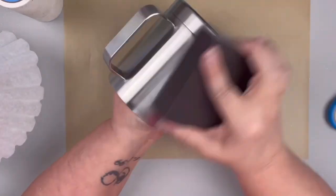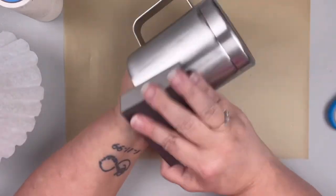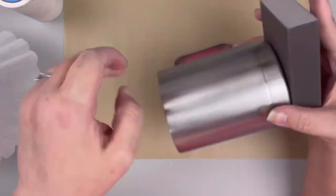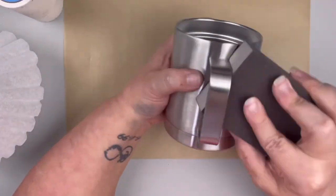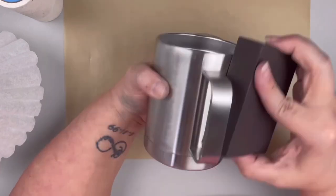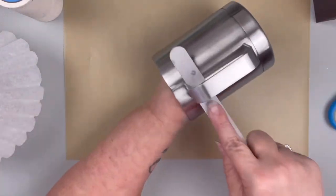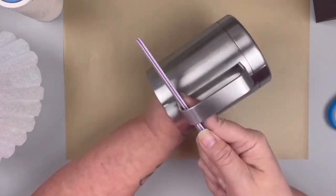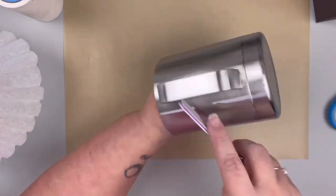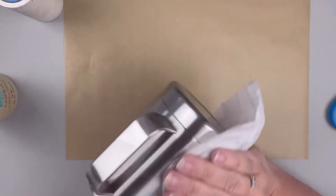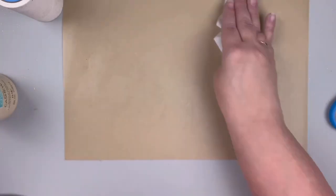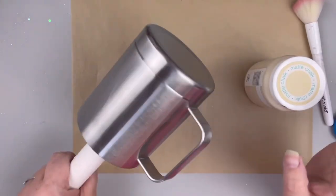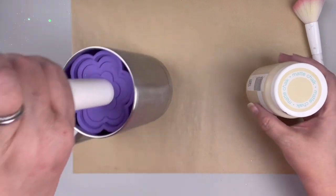And then I'm going to take my sanding block and sand this thing down. You want to get off that protective layer. Getting underneath the handle is very tricky. So what I end up doing to get underneath the handle is just taking this emery board and it works amazing. So once I get all of that sanded, I wipe it down with 91% alcohol.